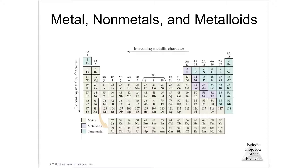Metallic character refers to the extent to which an element exhibits the physical and chemical properties of metals — so how much more like a metal is it? Not all metals are equal; some metals are more metallic than other metals. Metallic character generally increases as you go down the periodic table.